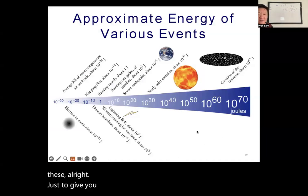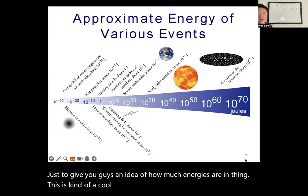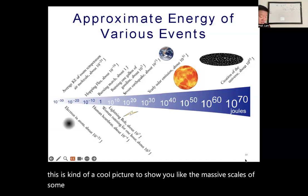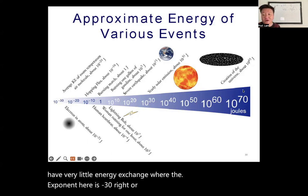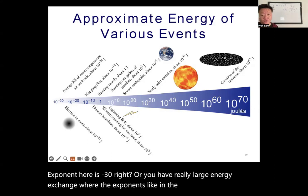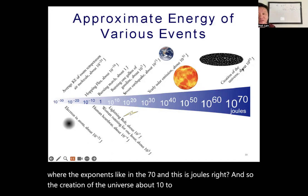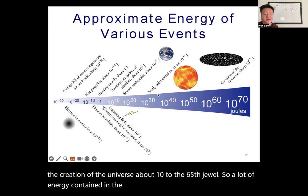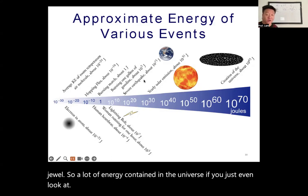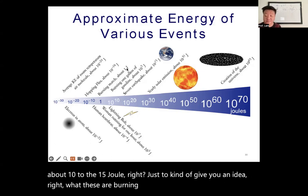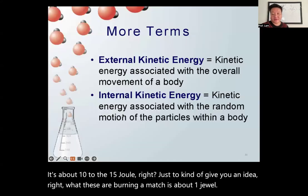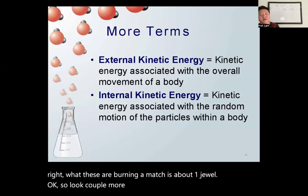Energy exists at massive scales. The creation of the universe released about 10⁶⁵ joules. A severe earthquake releases about 10¹⁵ joules. Burning a match releases about 1 joule. Energy exchanges can also be extremely tiny, with exponents as low as −30 in joules.